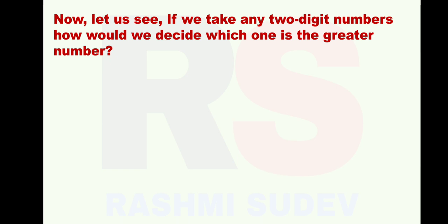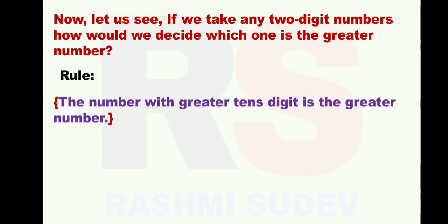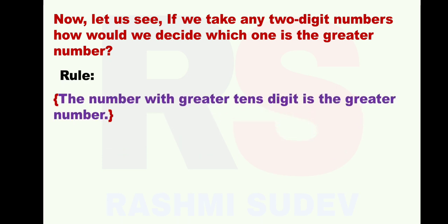Let us take two two-digit numbers and solve. The rule is: the number with the greater tens digit is the greater number. The rule seems difficult, but when you solve it, it is easy. Let us see.